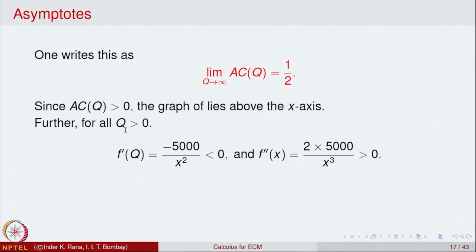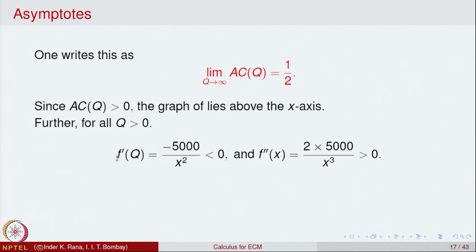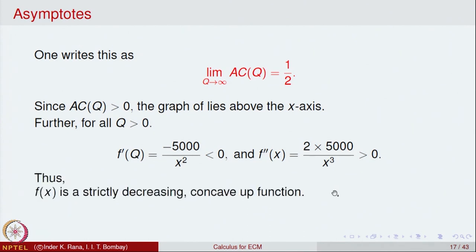The first derivative of the average cost function AC(x) = 5000/x + 0.5 is AC′(x) = −5000/x², which is always negative, so AC is strictly decreasing. The second derivative is +10000/x³ > 0 for all x > 0, so the average cost function is concave up. Thus the average cost function is strictly decreasing and concave up.